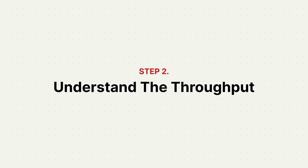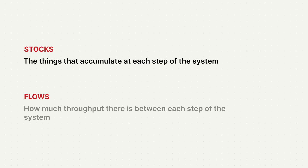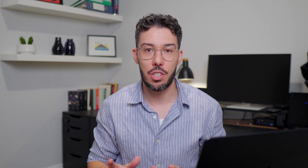Now we have a model or system of the space, but that's not enough. What we actually need to understand now is the stocks and the flows. Stocks are the things that accumulate at each step, and flows are how much throughput there is between steps. In our example, we have a model of product development, so we have to ask ourselves: what's the thing that flows through this model? In our case, it's product features.